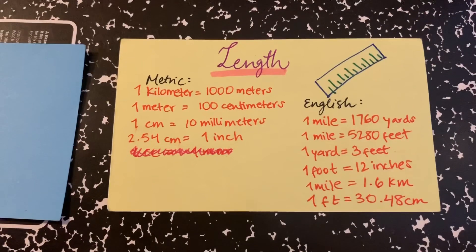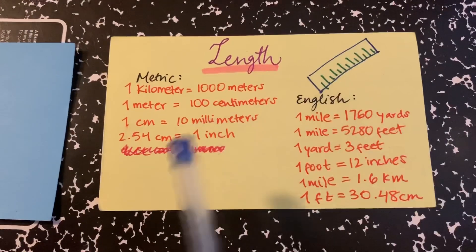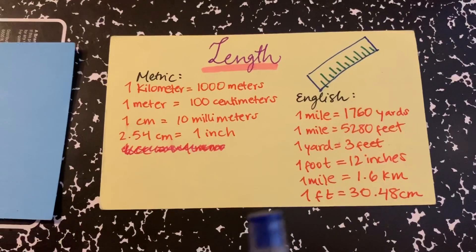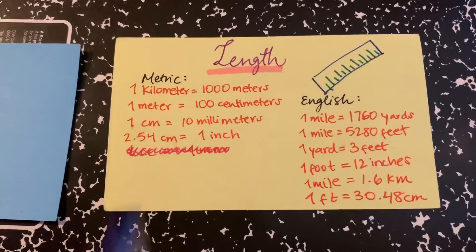And 1 mile is equal to 1.6 kilometers. And lastly, 1 feet is equal to 30.40 centimeters. So all of them are important, and I've seen in many HESI questions these are the common conversions in the length.